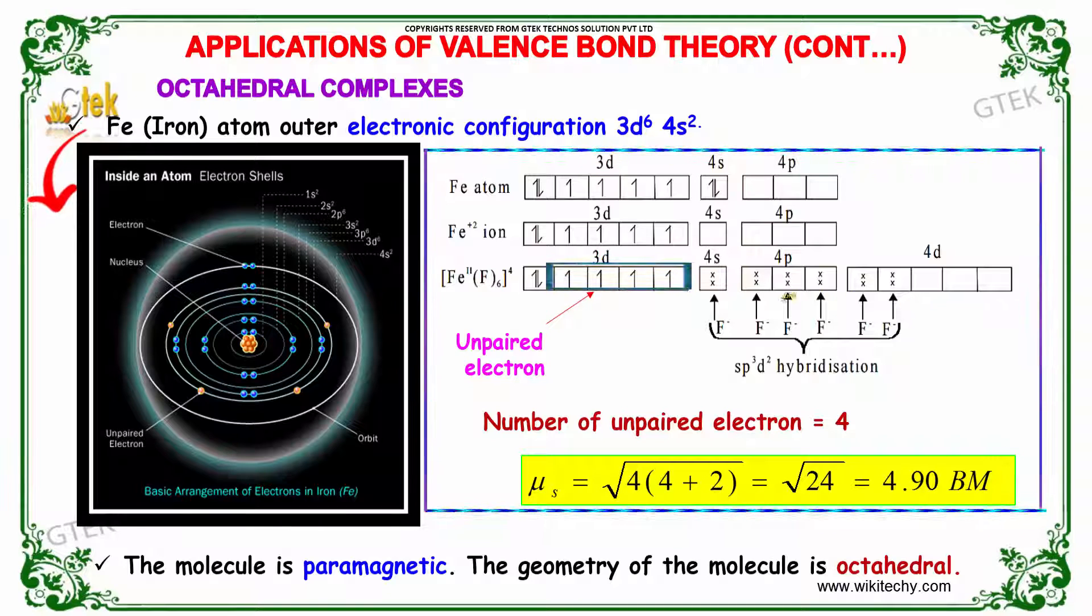The number of unpaired electrons is 4. μ equals √(4×4+2) = √(4×6) = √24 = 4.90 Bohr magneton. This molecule is paramagnetic and the geometry of the molecule is octahedral.